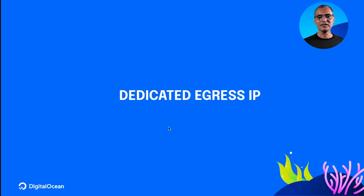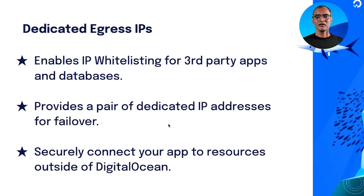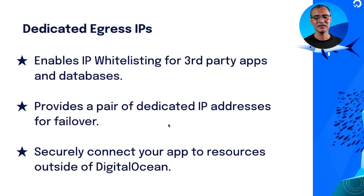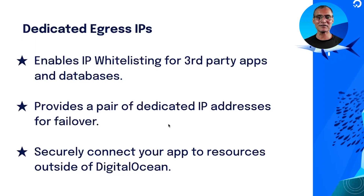Let's talk about dedicated Egress IP. Most applications rely on third-party services like Datadog and Twilio. While you have API-based authentication to those services, it's often good security practice to enable IP whitelisting. Your app runs as ephemeral containers on our platform, so it doesn't really have a fixed set of outgoing IP addresses. Dedicated IP solves that problem — it assigns a pair of static outgoing IP addresses to your application so that you can implement IP whitelisting.